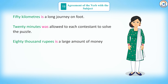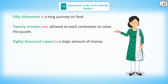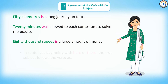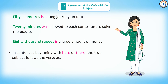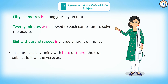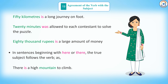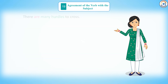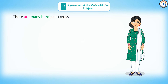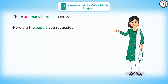80,000 rupees is a large amount of money. Rule 11: in sentences beginning with 'here' or 'there', the true subject follows the verb — as in, there is a high mountain to climb; there are many hurdles to cross; here are the papers you requested.